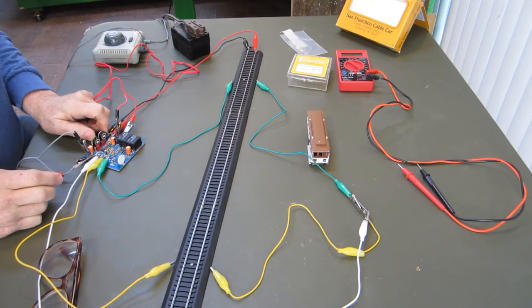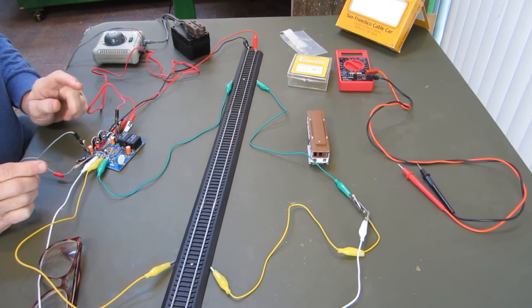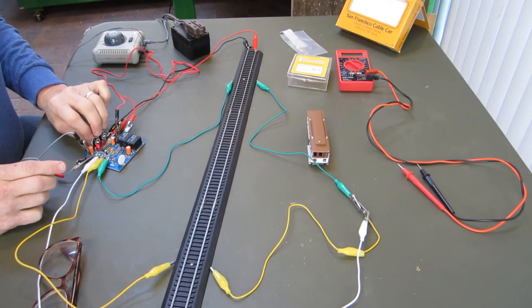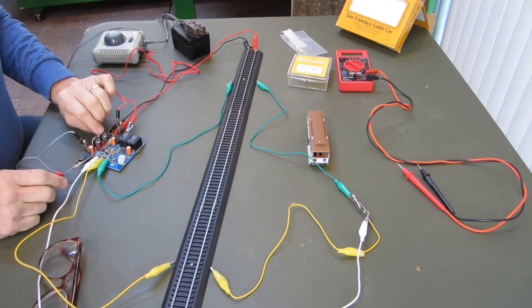Now we'll try it again. We'll turn this until the light comes on. When the light comes on, that is the sensitivity level. We'll set it back until the light goes off and that's as far as you need to go back. Then we'll set the other one.